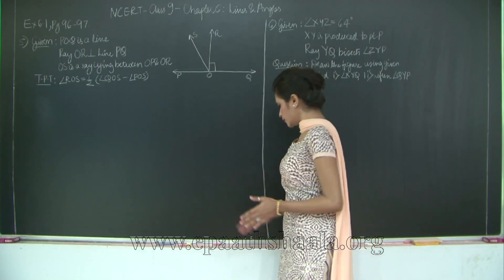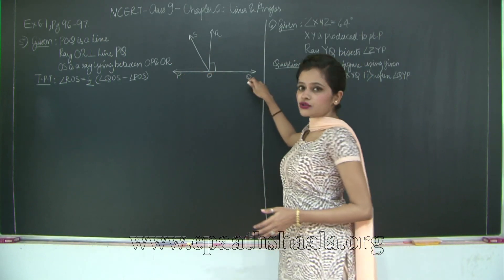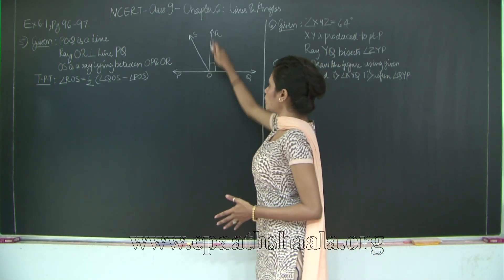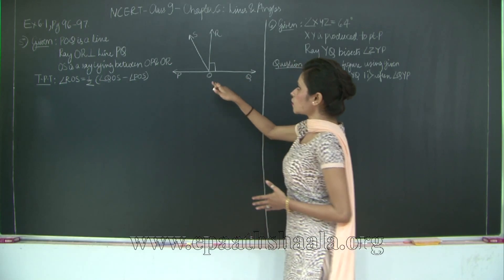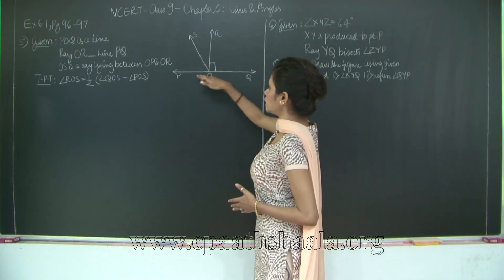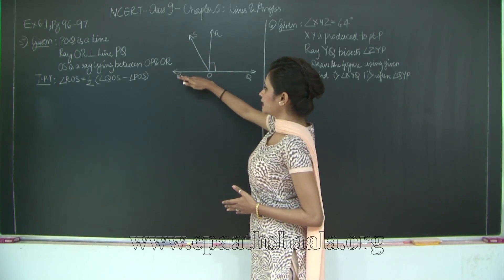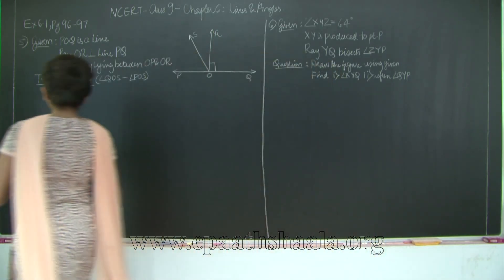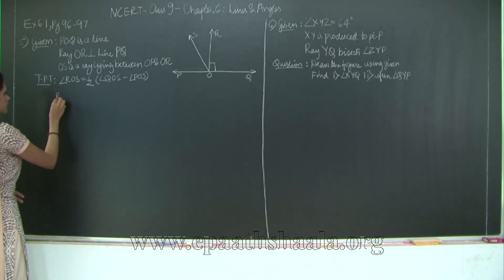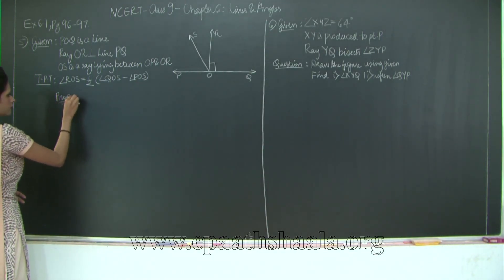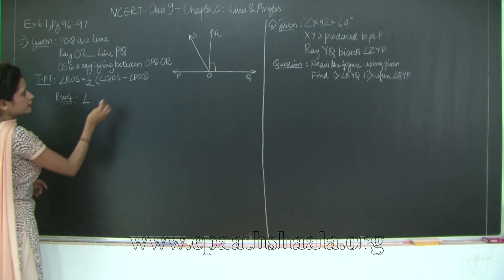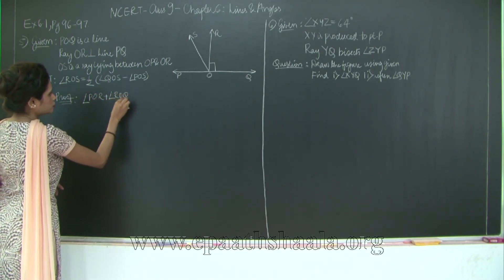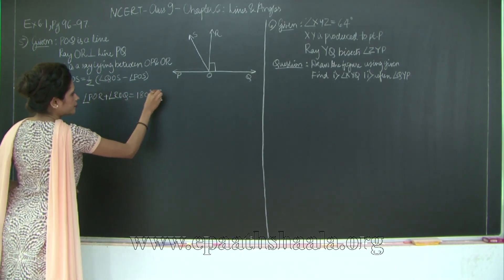Let us see how we are going to do this. PQ is a straight line and OR is perpendicular to this line. Then according to the linear pair axiom, angle POR plus angle ROQ is 180 degrees. OS is another ray between OP and OR, so angle POS plus angle SOR plus angle ROQ equals 180 degrees. Let us write this as proof: angle POR plus angle ROQ equals 180 degrees — linear pair axiom.